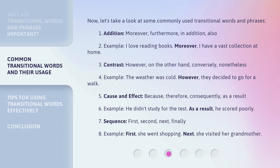Next, Contrast: however, on the other hand, conversely, nonetheless. For example: "The weather was cold. However, they decided to go for a walk." Then, Cause and Effect: because, therefore, consequently, as a result. For example: "He didn't study for the test. As a result, he scored poorly."